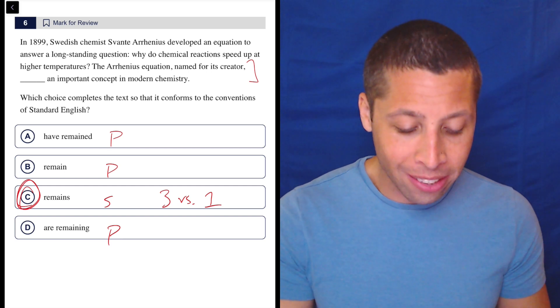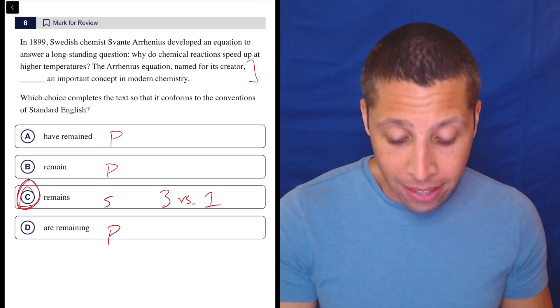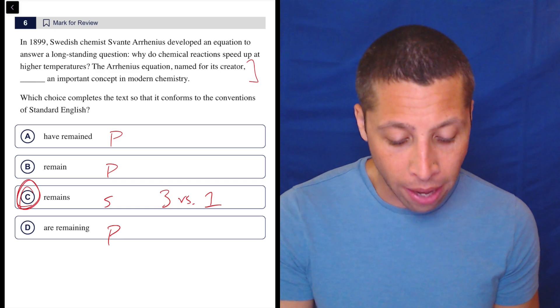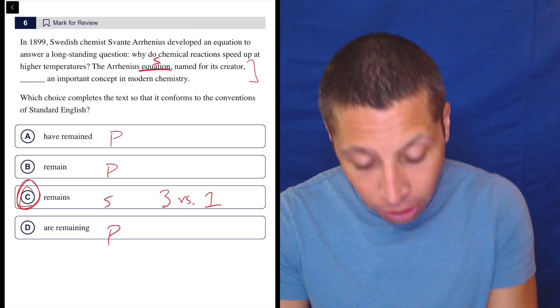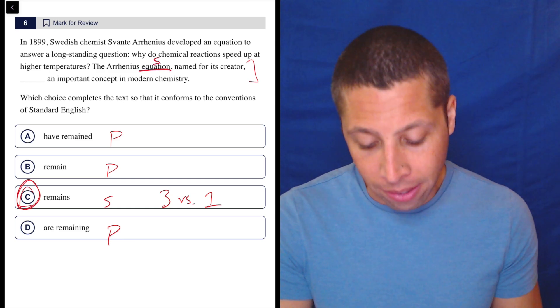So the Arrhenius equation, named for its creator, remains an important concept in modern chemistry. Yeah, the equation—that's singular, so we need the singular 'remains.' That's it.